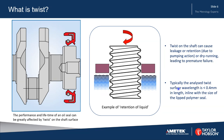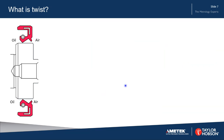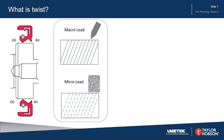Typically the analyzed twist surface wavelength is less than 0.4 millimeters, in line with the size of the lipped polymer seal. Here again is the same bearing with oil on this side, air on this side and the seal. During the machining process, a single point tool can create macro lead on the surface, represented by these lines here. The lead can have multiple start positions and it can vary in pitch depending upon the manufacturing process. Looking at what we call micro lead, this is created by the grinding process after having done the turning process, breaking up the marks left by the turning process.